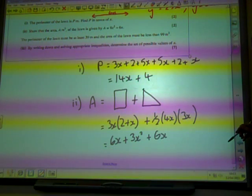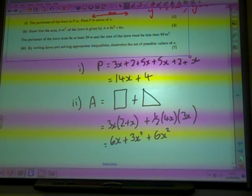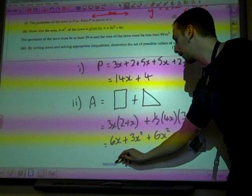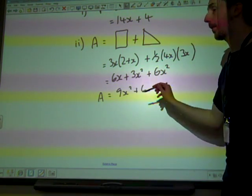Is that just 6X? And that's 6X squared. Oh, 6X squared, yeah, thank you. There we go, that's better. Which gives us A is 9X squared plus 6X.